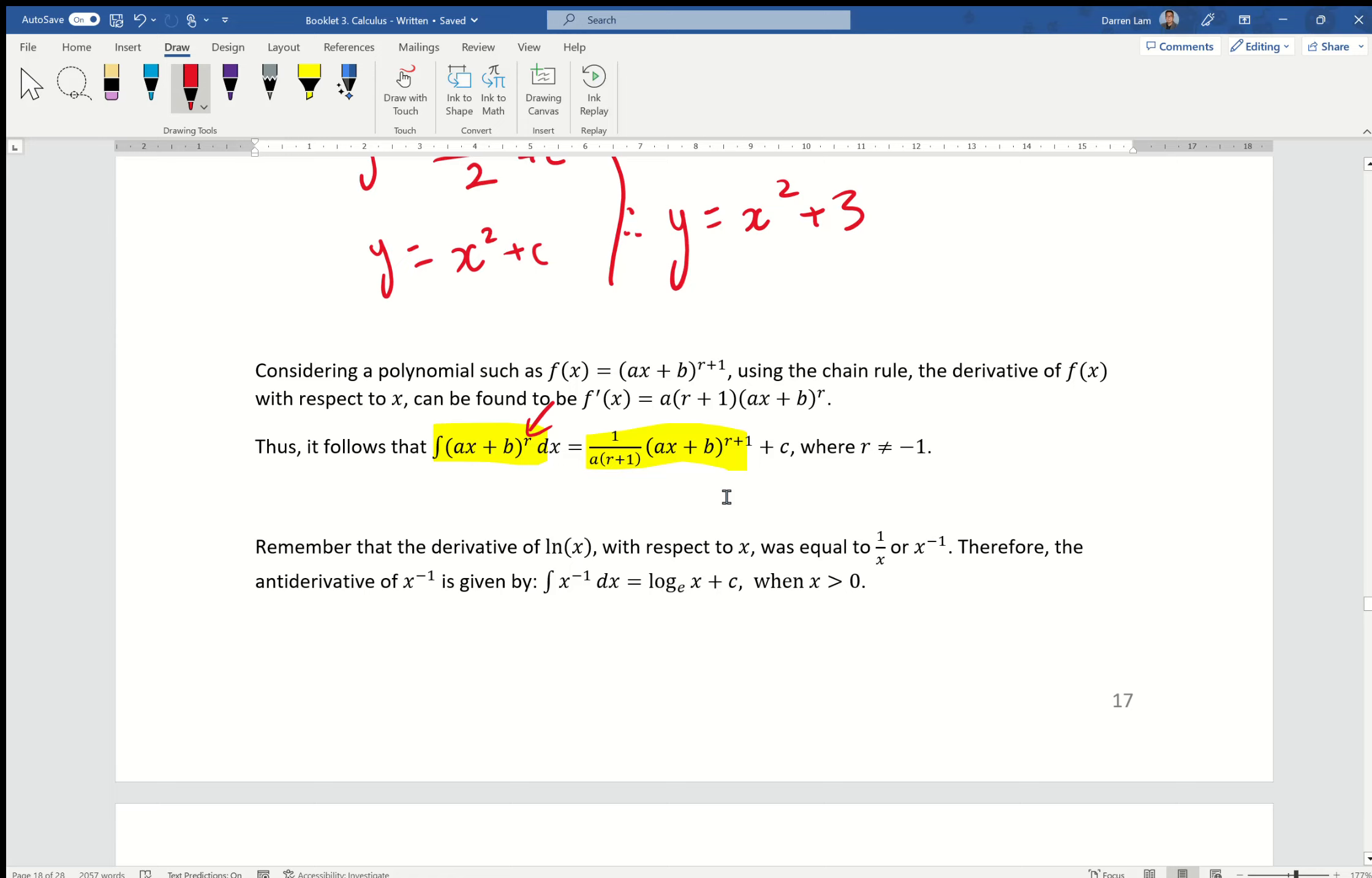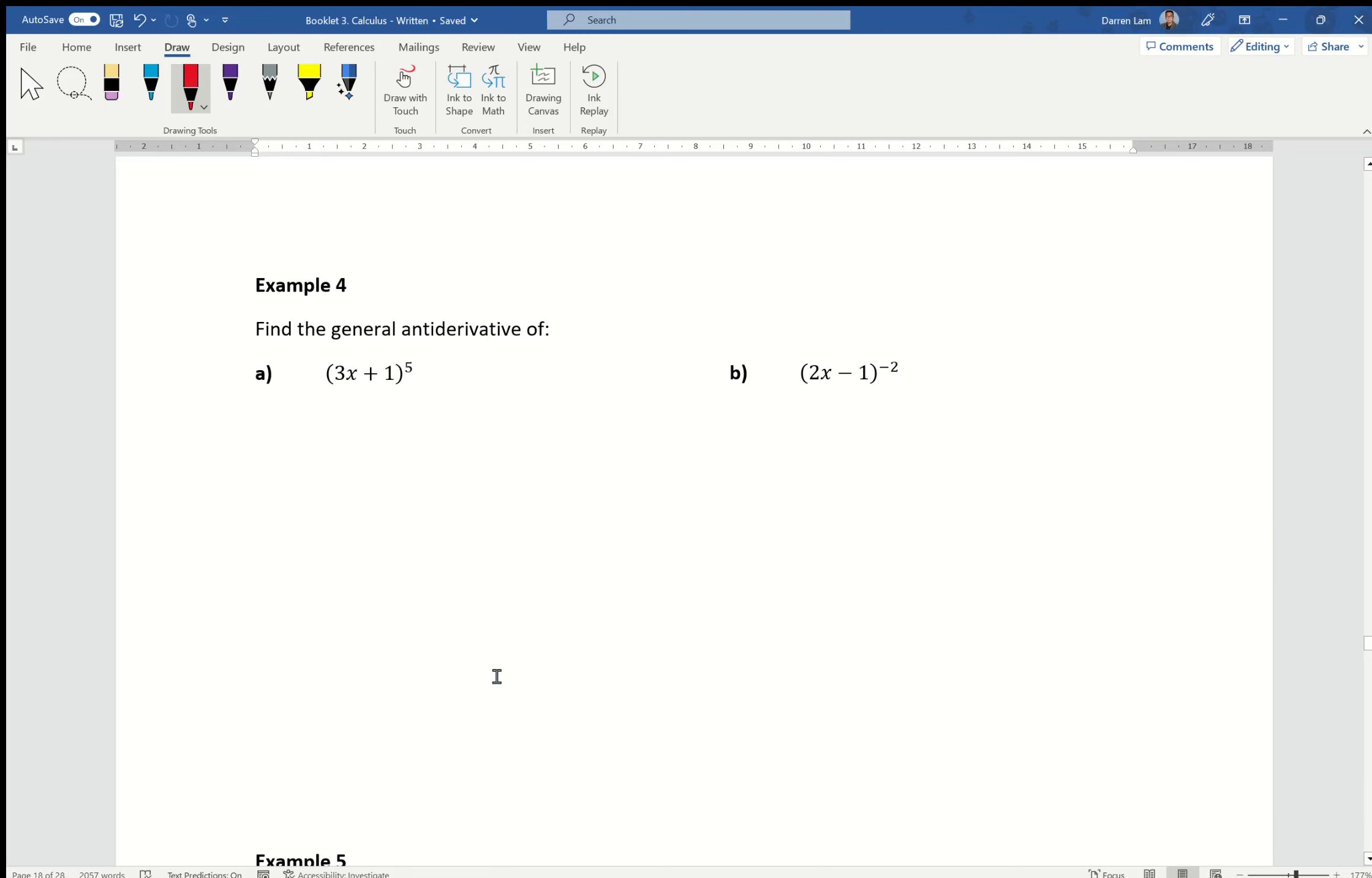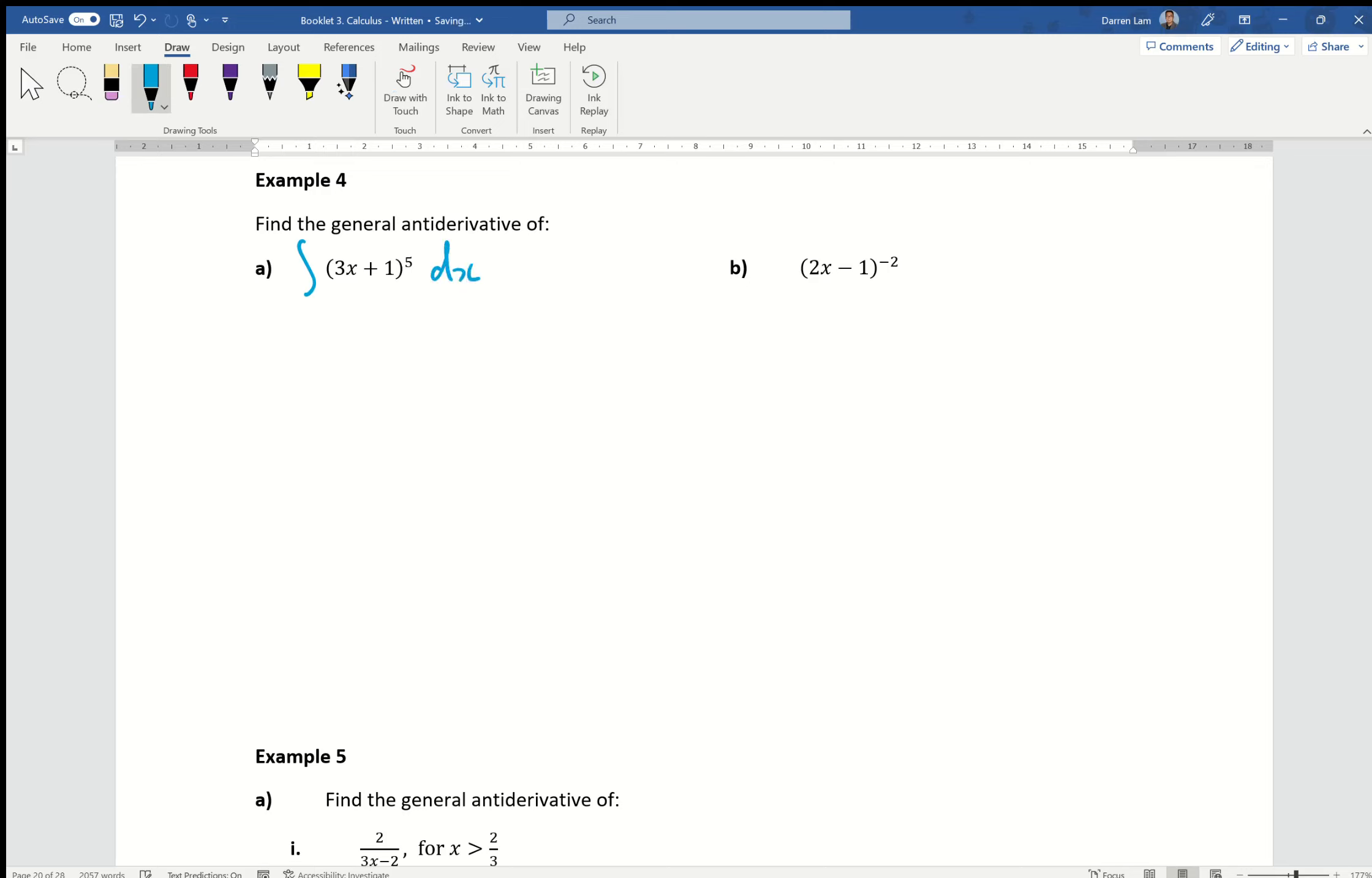I'm going to jump into an example for this one and then go back and look an example for the other ones. So we're looking at example 4a with a general antiderivative where we have the power not being 1. So I write this as an antiderivative of 3x plus 1 to the power 5 dx equals to 1 over, and I'm going to write the multiplication of our first constant, so first coefficient by the power increased by 1, which is 6, and we get 3x plus 1 to the power 6 plus c, which gives us an answer of 1 over 18 multiplied by 3x plus 1 to the power 6 plus c.